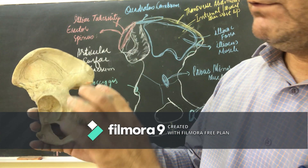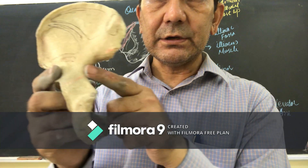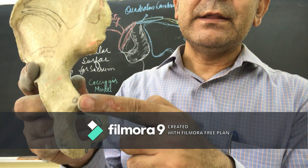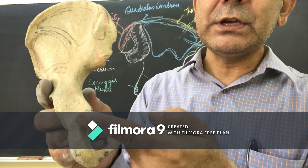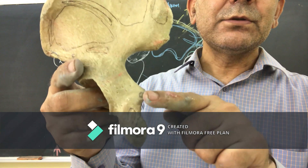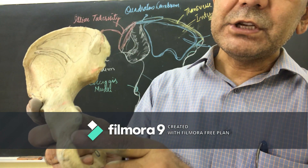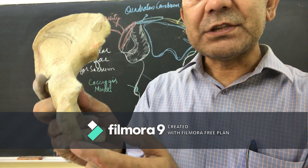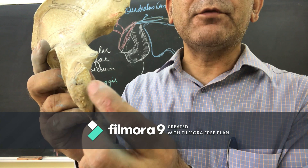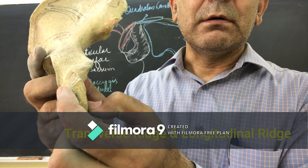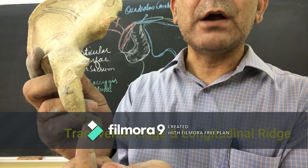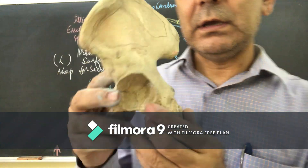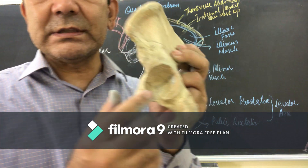On the posterior side is the greater sciatic notch. Moving downward along the posterior border is the ischial spine, and just below the ischial spine is the lesser sciatic notch. Below the lesser sciatic notch is where the ischium bone begins, with the ischial tuberosity, which has two ridges: a transverse ridge and a longitudinal ridge.